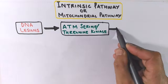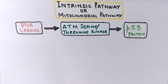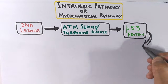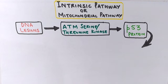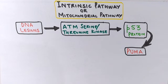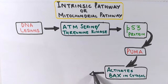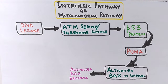ATM kinase in turn activates the p53 protein, also called the tumor suppressor protein. This p53 regulates another protein called Puma — that's p53 upregulated modulator of apoptosis — which is a pro-apoptotic protein. Puma then activates the Bax protein, and activated Bax becomes mitochondrial membrane bound.